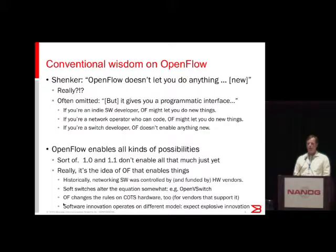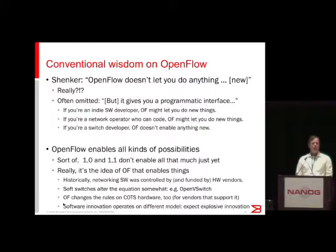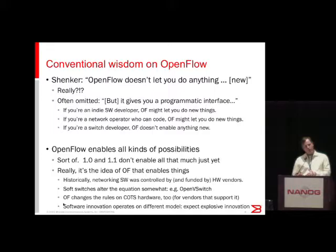As Guido mentioned, most people have adopted OpenFlow 1.0. 1.1 is not getting a lot of adoption. 1.2 will come out of embargo in a few days. OpenFlow today has lots of gaps — it's really early days, and it's not today's versions of the standard that enable everything, but the idea of OpenFlow. Historically, hardware vendors have controlled the software and paid for software development through selling hardware, which has constrained the pace of innovation. When soft switches became part of the game with hypervisors, that altered things a little, and now OpenFlow alters it in a bigger way — we can expect much more rapid innovation going forward, iterating at a software pace instead of hardware cycles.